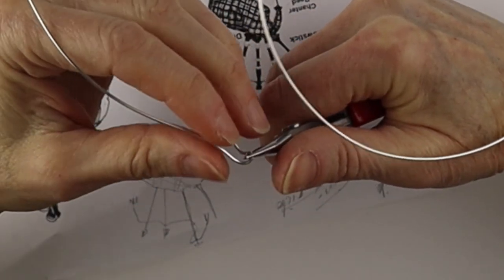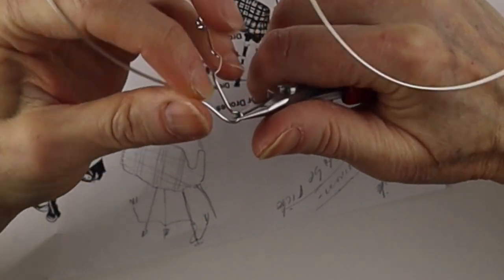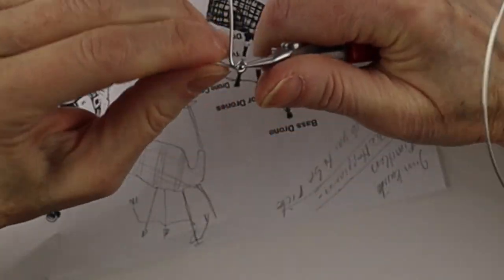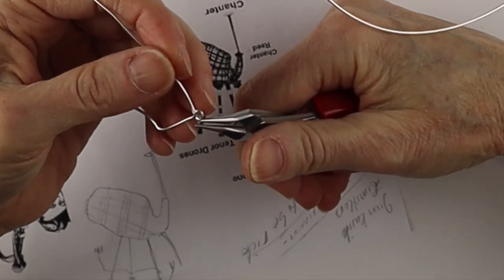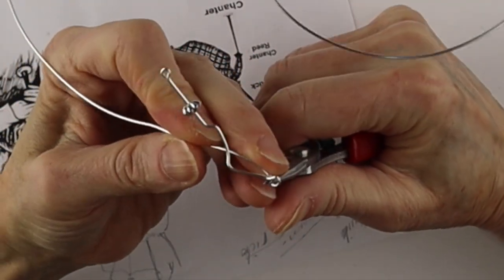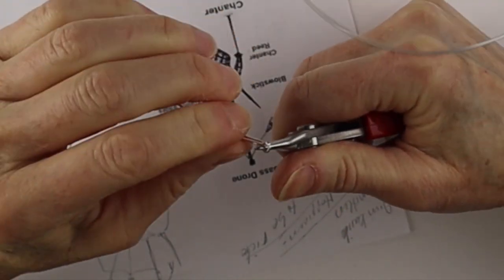This design was very improvised—I kind of made it up as I went along. We formed a little loop and then we're actually going to bend it back down. We're going to do several of these sticks to form the drones.